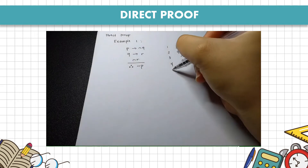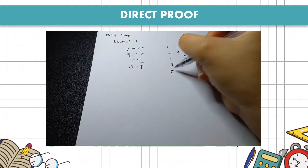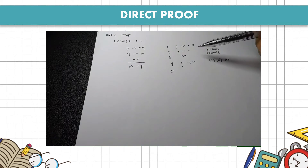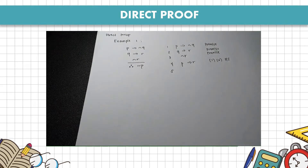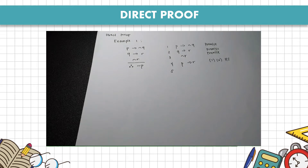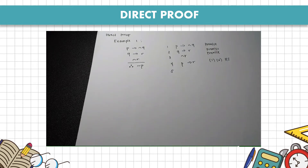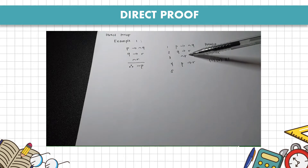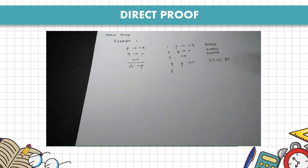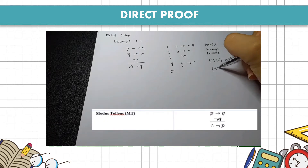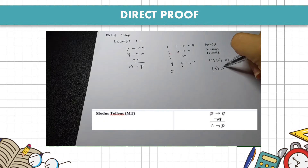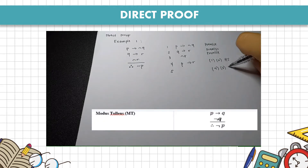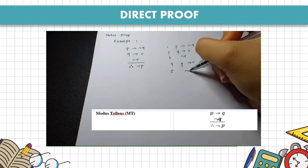After that, we look again at our premises and the newly derived step 4 to find further applicable rules of inference or replacement. We notice that step 4 and premise 3 resemble modus tollens (MT). Applying modus tollens to steps 4 and 3, we get not P.